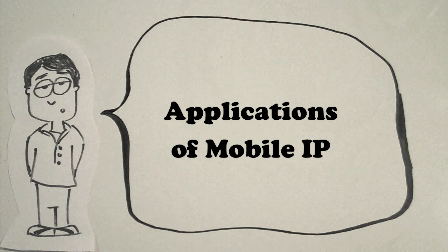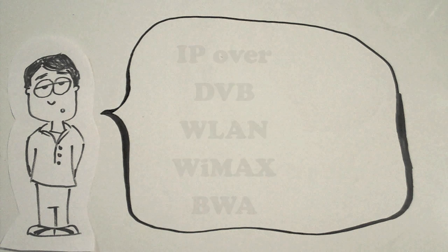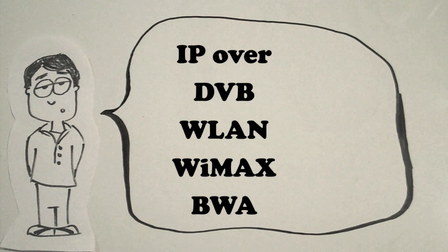Mobile IP is most often found in wired and wireless environments where users need to carry their mobile devices across multiple LAN subnets. It may be used in roaming between overlapping wireless systems, for example IP over DVB, WLAN, WiMAX, and BWA. Generally, mobile IP is most useful in environments where wireless technology is being utilized.